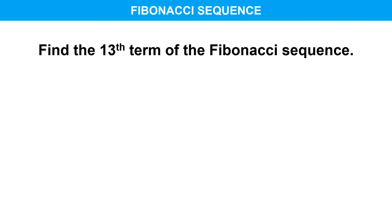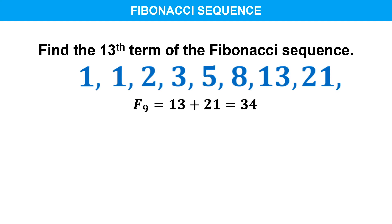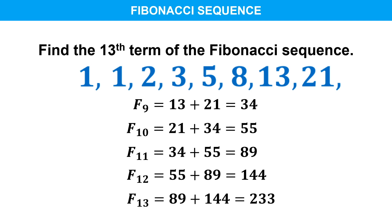Let's solve this problem: Find the 13th term of the Fibonacci sequence. Using the recursive formula, the first eight terms are 1, 1, 2, 3, 5, 8, 13, and 21. To find the succeeding term, simply add the last two terms. The ninth term is 13 plus 21, equal to 34. The tenth term is 21 plus 34, equal to 55. The eleventh term is 34 plus 55, equal to 89. The twelfth term is 55 plus 89, equal to 144. And the thirteenth term is 89 plus 144, which is 233.